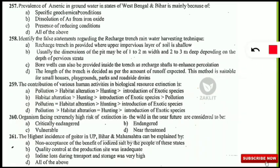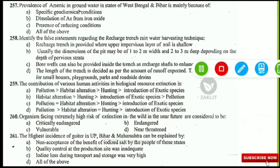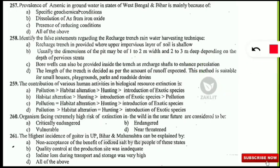The next question: organisms facing an extremely high risk of extinction in the wild in the near future are considered to be what kind of organism? This is about IUCN categories. The correct option is A — critically endangered species are those having a high risk of extinction in the near future.